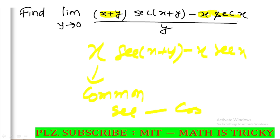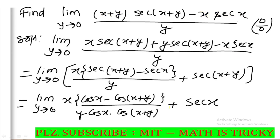We change the pattern and introduce a bracket with x commonly factored. Using sec(x plus y) — we apply the C plus D and C minus D trig identity. We get 1 by cos — listening to find the answer.